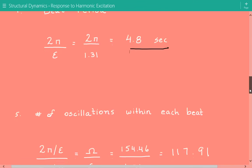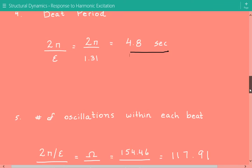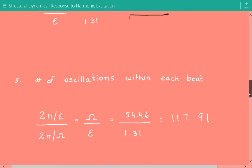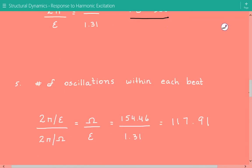Next, we're going to calculate the number of oscillations within each beat. And that is equal to 2π divided by epsilon divided by 2π divided by capital omega. So the 2π's cancel out, and this leaves us with capital omega, which is the excitation frequency, divided by epsilon.